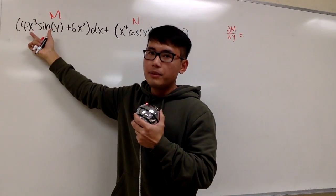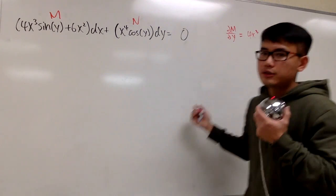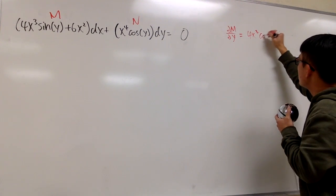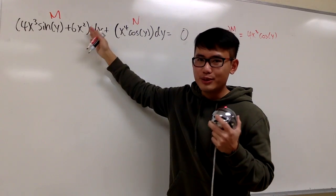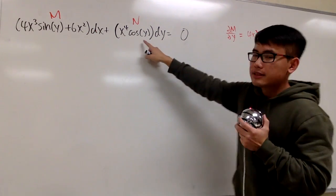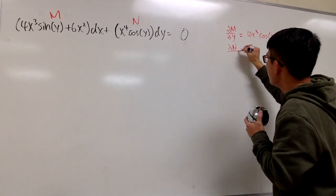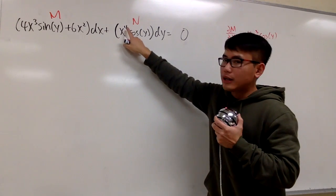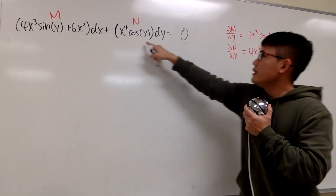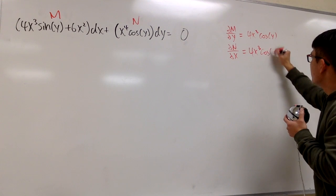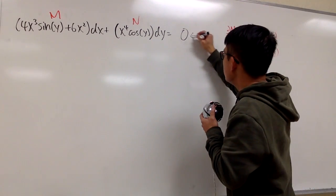So we take the partial of M with respect to y, meaning y is the variable. The 4x³ term is a constant, so it stays. The derivative of sine y in the y world is just cosine y, so we have altogether 4x³ cosine y, and the derivative of 6x² in the y world is just zero. And for N, we take the partial with respect to x. We just focus on x⁴ — the derivative of that is 4x³ — and cosine y is a constant, so it stays. As you can see, these two are the same, so this equation is exact.